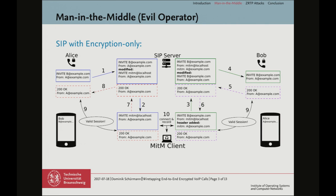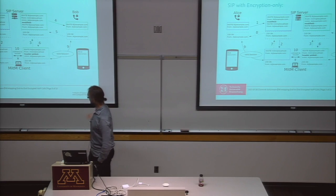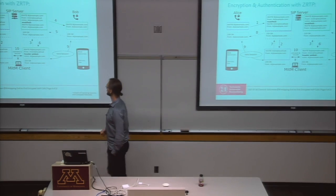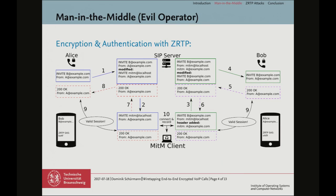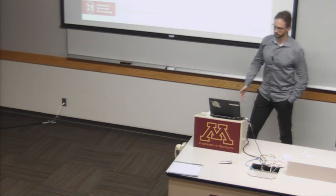On Bob's side, it says Alice at example.com. So how do you protect against this? This is ZRTP — same setup, but what the users are seeing is a little bit different. There is something called a short authentication string. It's just four characters shown on the screen, and on the other side it's also four characters shown on the screen. Alice and Bob need to compare these strings, and when they're different, there's an attack. This is how ZRTP works from a user's perspective.